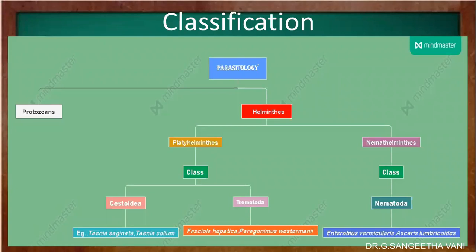Parasitology is broadly classified into two types: protozoans and helminths. Helminths are multicellular organisms which are bilaterally symmetrical, further subdivided into platyhelminthes and nematohelminthes. In platyhelminthes, which are leaf-like or tape-like in shape, they are subdivided into cestoidea and trematoda.